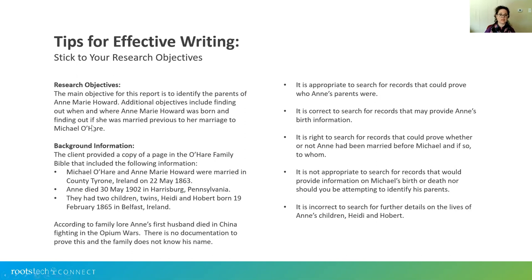For example, in this case, the client hired the researcher to do the following: the main objective is to identify the parents of Ann Marie Howard. Additional objectives include finding out when and where Ann Marie Howard was born, and finding out if she was married prior to her marriage to Michael O'Hare. The client is not asking you to find Ann Marie's children, nor to determine when and where Michael and Ann were married. It's important to stick to the research objectives — don't go off on a tangent.